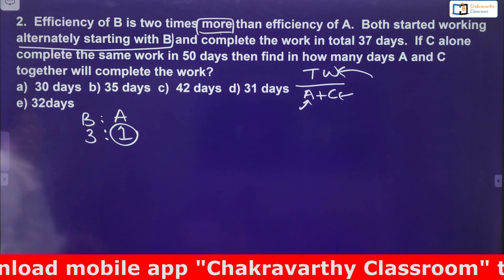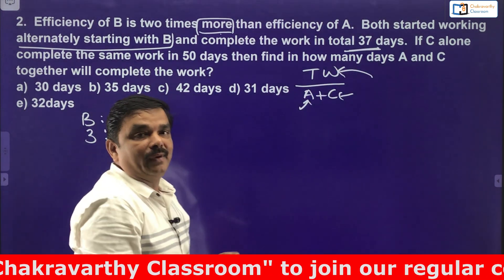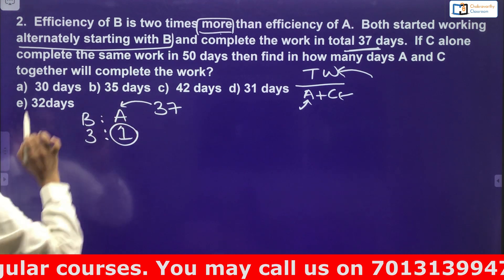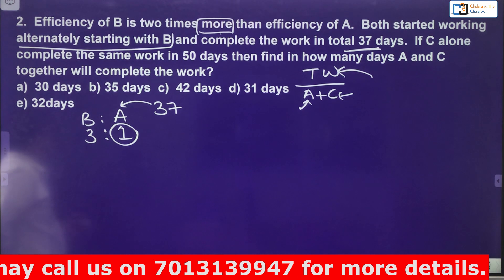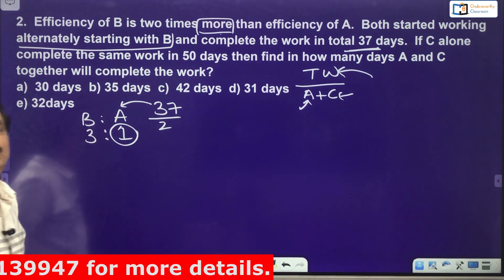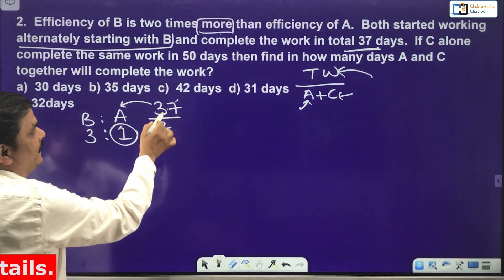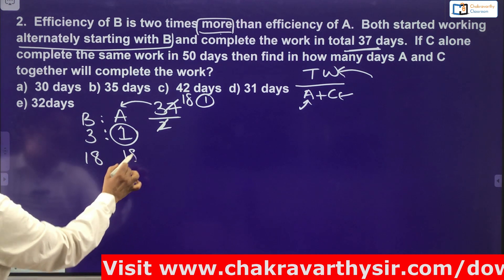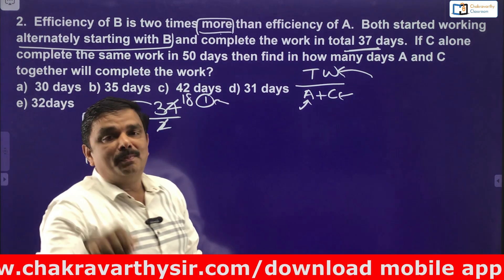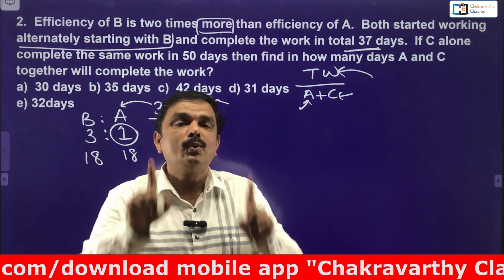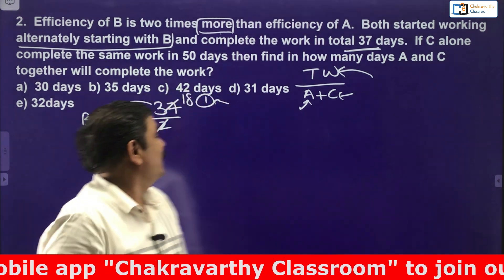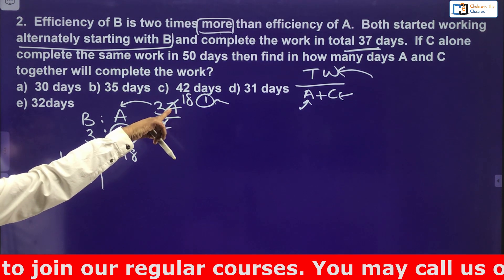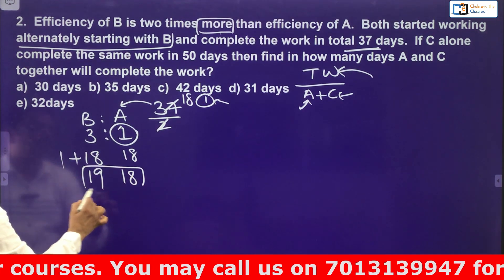A and B work alternatively starting with B, completing the work in 37 days. Since 2 persons are there, divide 37 by 2 — that gives 18 with 1 day remaining. So B works 18 days and A works 18 days, and the remaining 1 day goes to B because B started the work. Therefore, B worked for 19 days and A worked for 18 days out of 37.